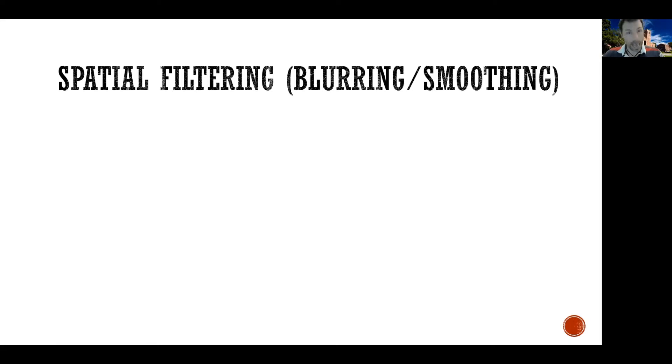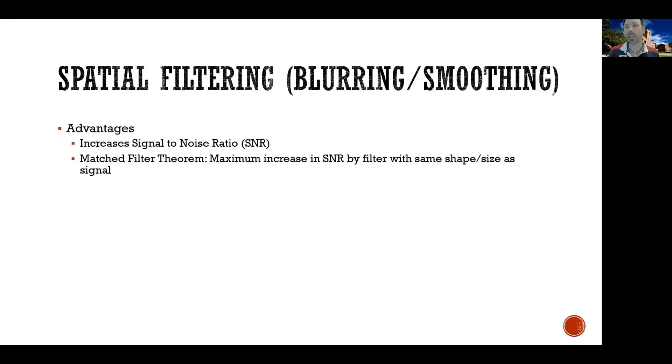Now there are certain advantages to smoothing. On the advantage side, it does increase the signal to noise ratio. Just imagine having 20 voxels. They all do the same thing, but they also have some noise in them. If they're all doing the same thing and you average them, the random noise of each individual voxel will be canceled out. So again, smoothing is advantageous because it helps increase our signal to noise ratio.